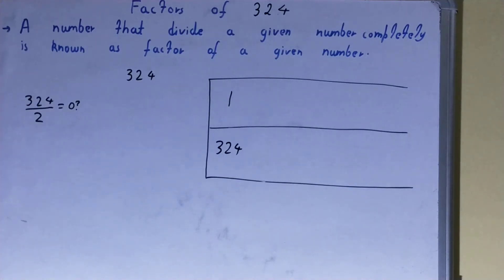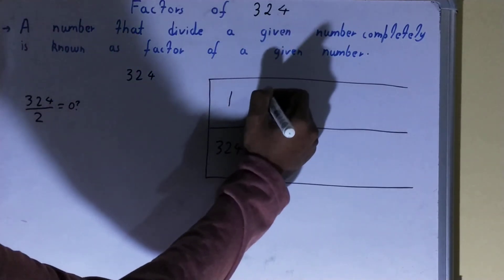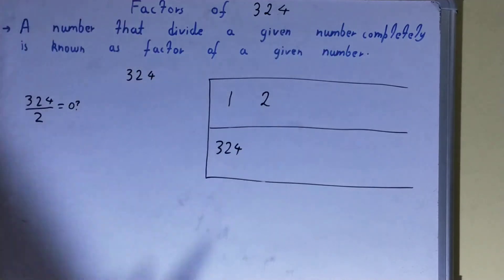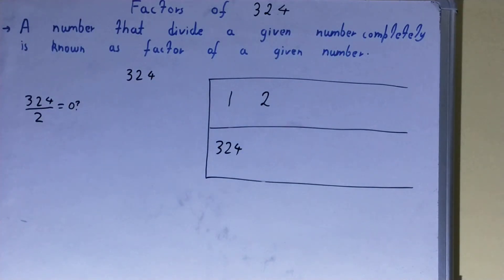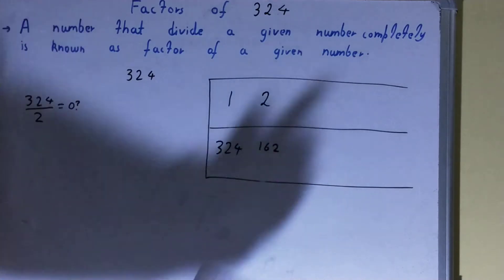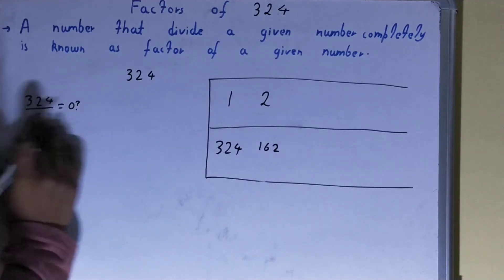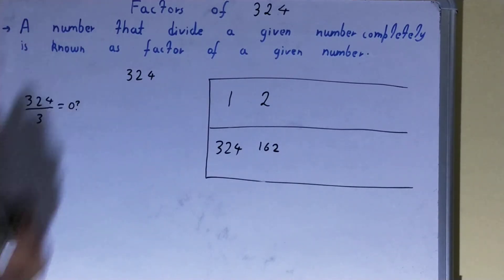Is 324 divisible by 2? Yes, because 324 is an even number and all even numbers are completely divisible by 2. So 2 is a factor. We write 2 in the list, and since 2 × 162 = 324, 162 will also be a factor.